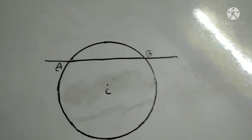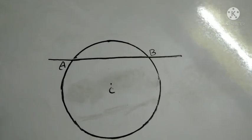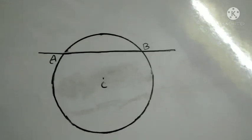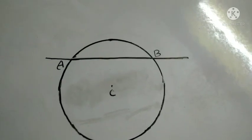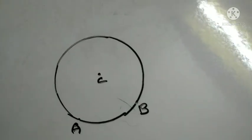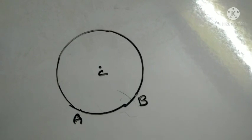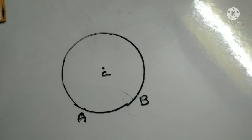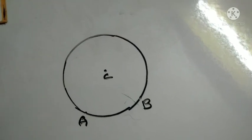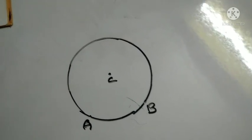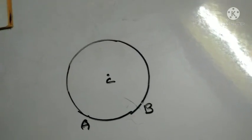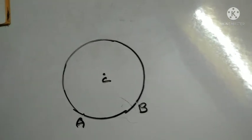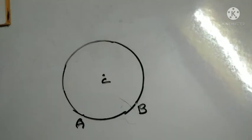What is an arc? Any part of the circumference of a circle is known as arc. In the adjoining figure, AB is an arc, which is denoted by arc AB.